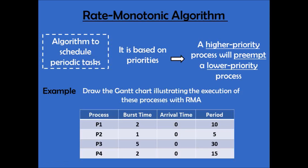On this video you will see an example of the Rate Monotonic algorithm. This algorithm is used to schedule periodic tasks and it is based on priorities. This means that a higher priority process or task will preempt a lower priority process. So if we have a process running and a second process with a higher priority arrives, we will have to stop the first process in order to give the CPU time to the second process. Now, I will draw the Gantt chart to illustrate the execution of the following four processes with the Rate Monotonic algorithm.